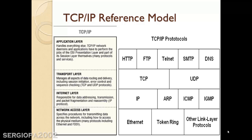The next layer is the application layer, which handles everything else. It performs the jobs of the OSI presentation layer and also part of the session layer. The protocols that this application layer has are HTTP, FTP, Telnet, SNTP, and DNS. Although the TCP/IP reference model and the OSI model seem to have things in common, the differences are also clear. I hope you enjoyed this video — thank you for watching.